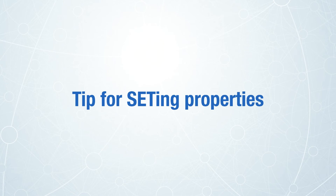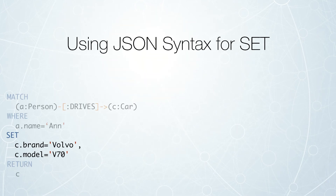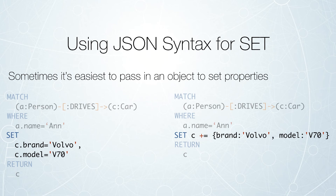After watching the last episode, one of my colleagues had a tip to share around setting properties. In episode five, we were talking about a person driving a car — Anne and Dan and their relationship. I was trying to set two properties by saying c.brand equals Volvo and c.model equals V70. Alternatively, you could use an object to set these properties — you say SET c += and then an object of the various properties. This can be easiest when using certain drivers in programming languages that handle objects really well.